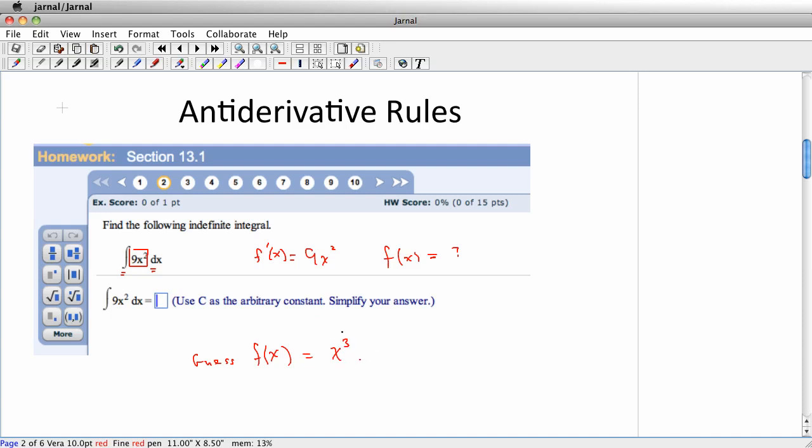Well, because I know that when I take the derivative of x cubed, the power here, the 3 that's there, is going to become a 2. And the question up here has an x squared in it. So if I check that guess, I find out that the derivative of x cubed is 3x squared. So it's not 9x squared, it's 3x squared.